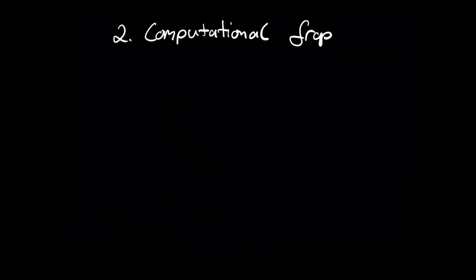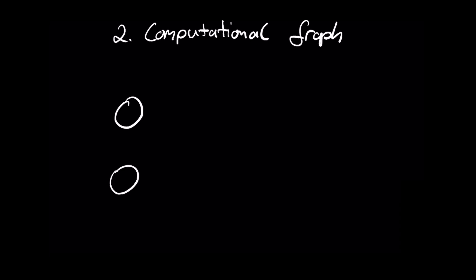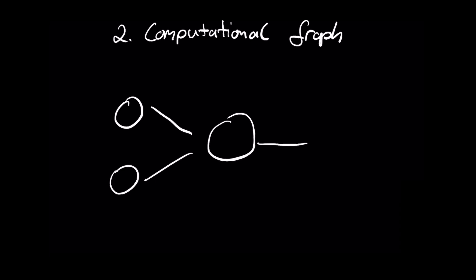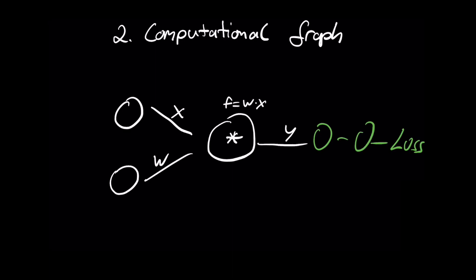The first concept is the concept of a computational graph. When we create our network with all the neurons, each computation in it is represented by a node. For example, here we have a multiplication node that simply multiplies the two inputs x and w with each other. Then of course we also have many more computations in this graph, and at the very end we calculate the loss — and we want to calculate the gradient of the loss with respect to the weights. This is also what deep learning frameworks like PyTorch and TensorFlow use internally to track all the computations in the network.